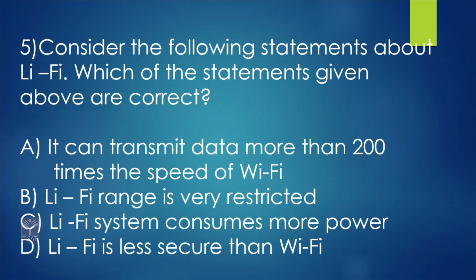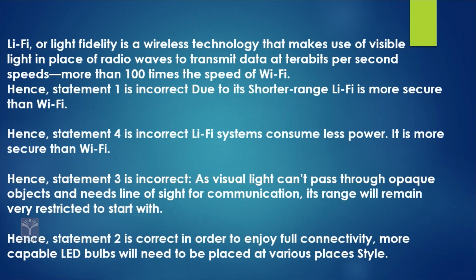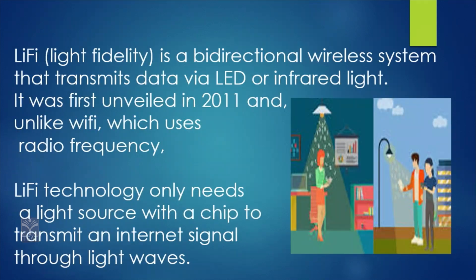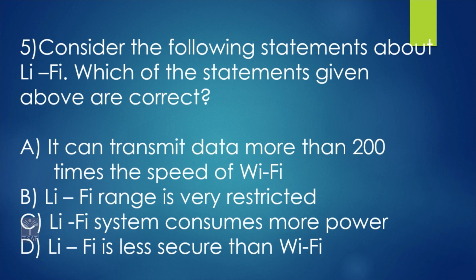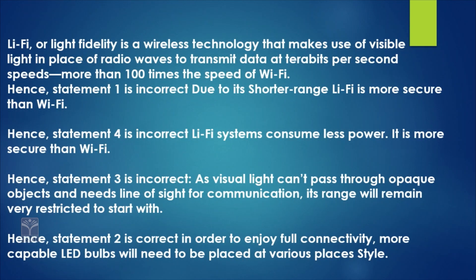Statement 1 — it can transmit data more than 200 times the speed of Wi-Fi — is to be checked. Statement 4 — LiFi is less secure than Wi-Fi — is incorrect, because LiFi is actually more secure than Wi-Fi. LiFi system consumes less power, but the option states it consumes more power — also incorrect. Statement 2 — LiFi range is very restricted — is correct.